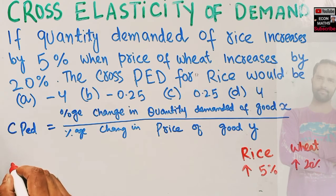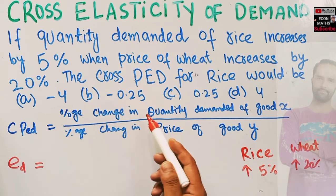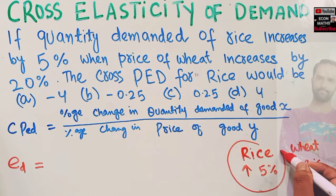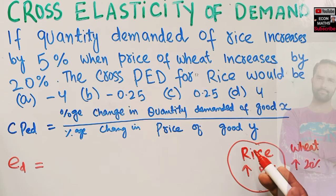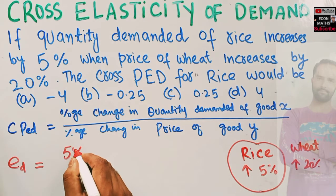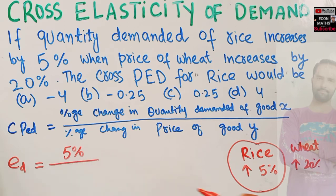So our cross price elasticity of demand will be equal to percentage change in quantity demanded of good X, which is rice. The quantity demanded has increased by 5%, divided by percentage change in the price of good Y, which is wheat.